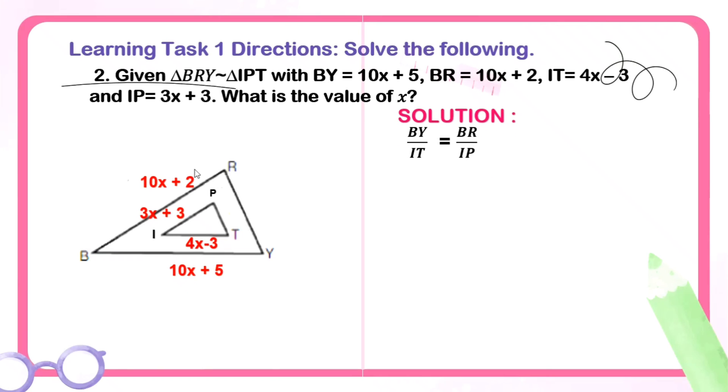How will we get x? We'll apply again what we learned about similar triangles, or finding the ratio of their corresponding sides. We can say segment BY over IT is equal to segment BR over IP. So let's substitute their values into our equation. BY is 10x plus 5 over IT, which is 4x minus 3. Then, equals BR, which is 10x plus 2 over IP, which is 3x plus 3. Then, cross multiply.